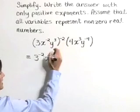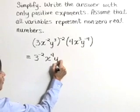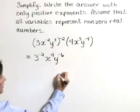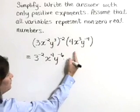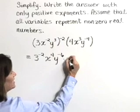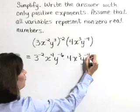So negative 2 times negative 2 is positive 4, times y to the 3 times negative 2, or negative 6. Times, we can just drop the parentheses off the second grouping and write that as times 4x to the third y to the negative fourth.